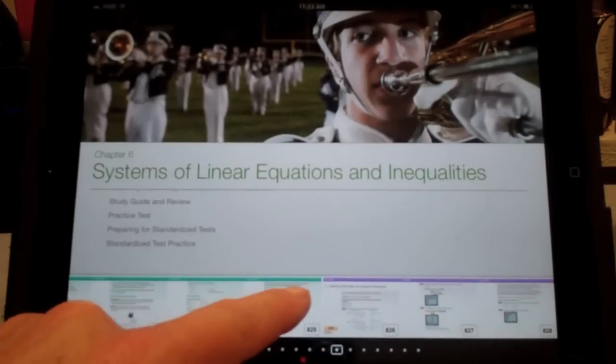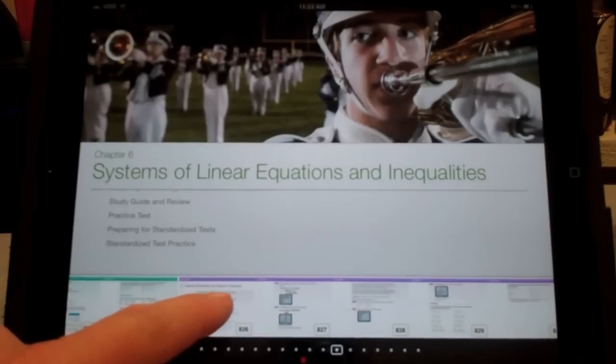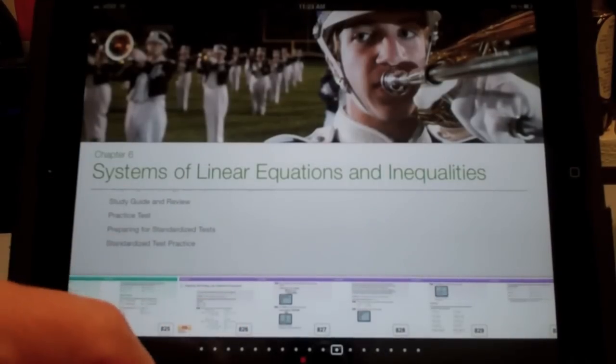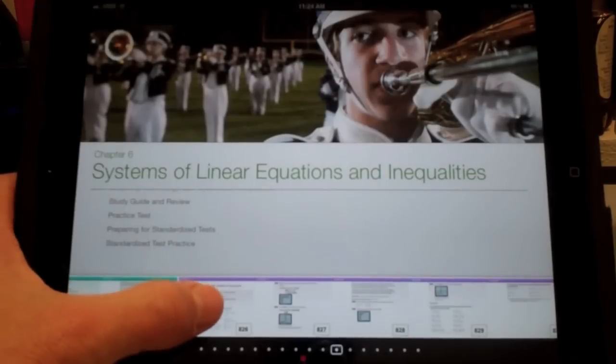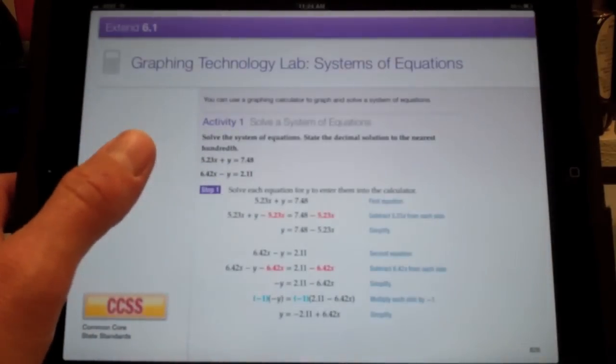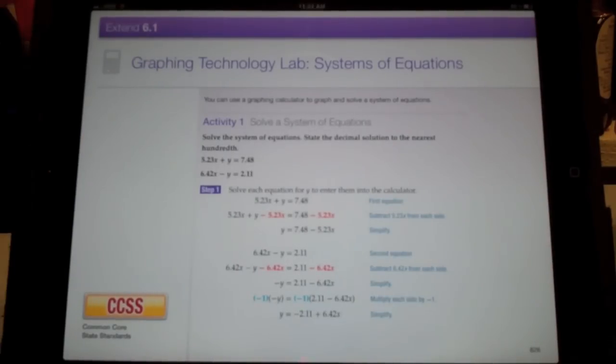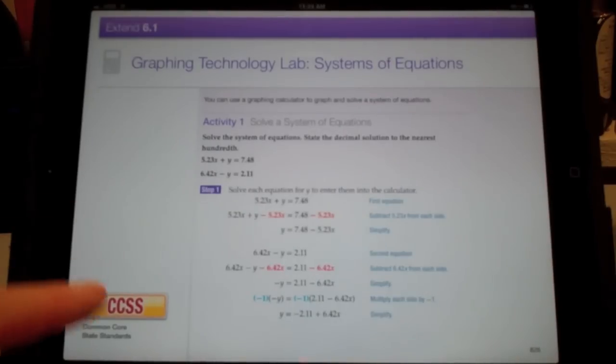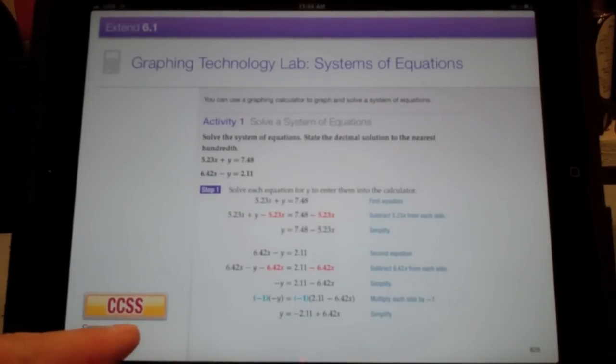The green ones are lessons, and the purple ones typically represent some lab. Taking a quick look at that, I can touch that particular page and see that it's an extension, and it shows a graphic technology lab, which is nice. As you look around the page, you'll see down here there's Common Core State Standards.